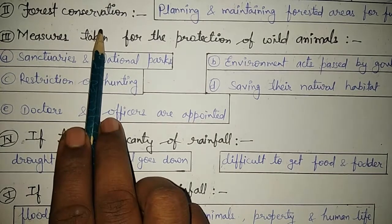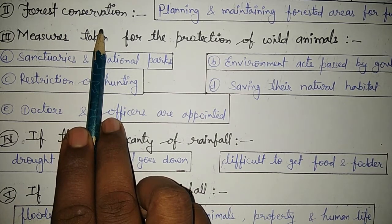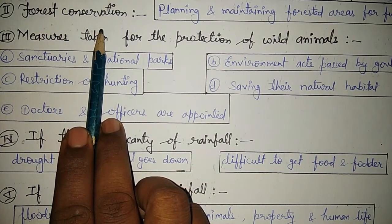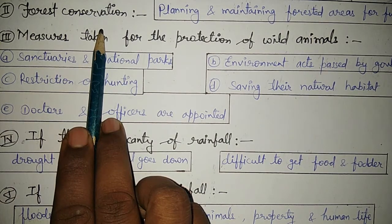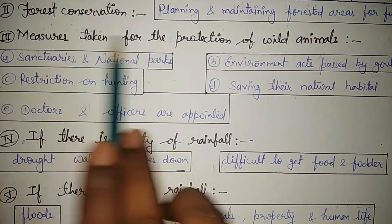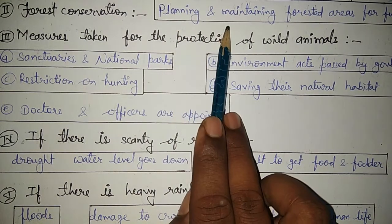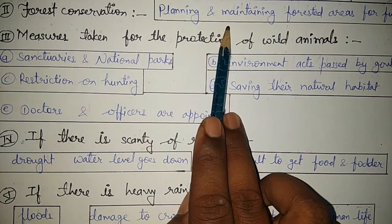The next point is forest conservation. By the activities of human beings, forests are reducing their area, and because of that we are facing many problems. For a good life on earth we need to save forest area, and this is called forest conservation.